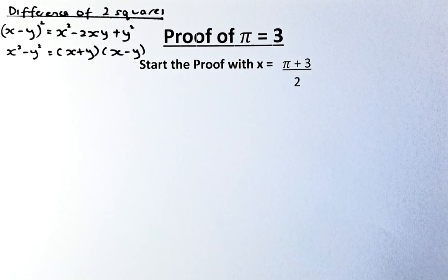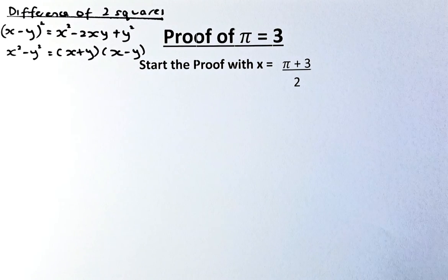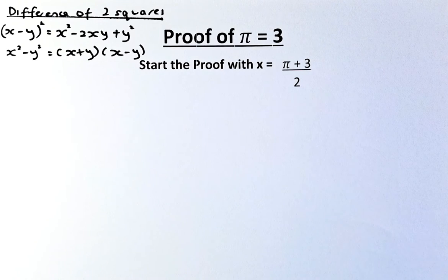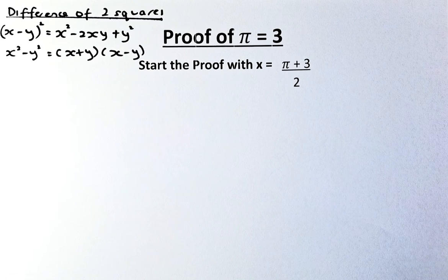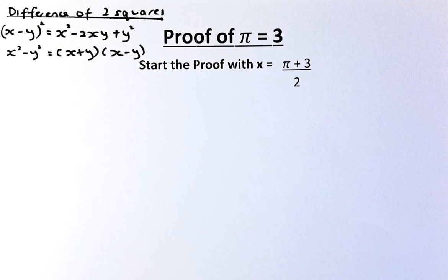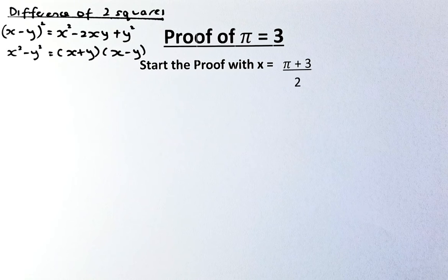Good day and welcome to another proving video. In this video, we are going to prove that pi is equal to 3. Of course, this is not true. This is just a mathematical fallacy, and I would appreciate it if you can point out which part of the step I made a wrong assumption — please put it in the comment section.